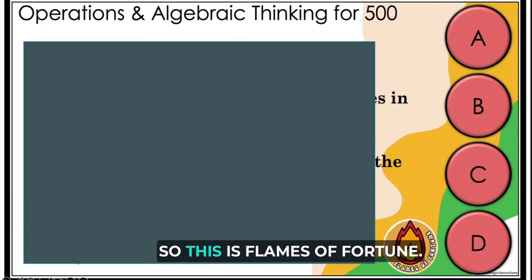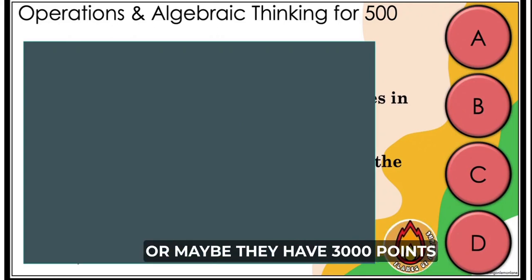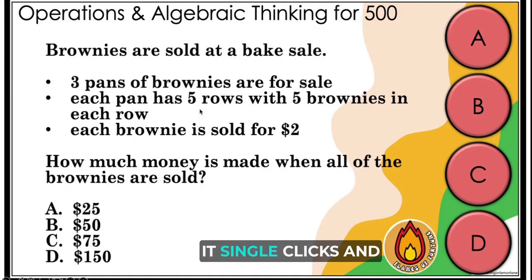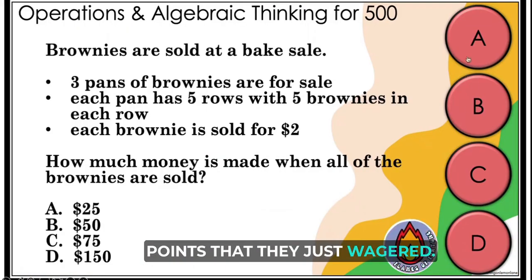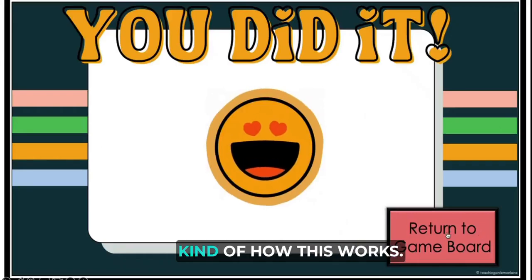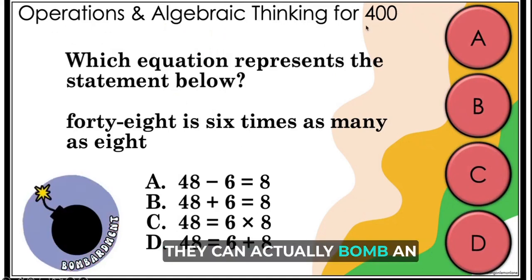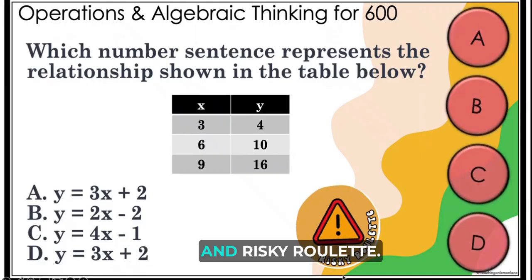Here's one of our disappearing squares — this is Flames of Fortune. The teams wager, say 500 points, or maybe they have 3,000 points and want to wager all of them. They wager, we click on the disappearing box, it single-clicks and disappears, and then students have the chance to answer and lock in their answer. If it wasn't quite right, they would lose all the points they just wagered. Bombardment is a fun one — if they get it correctly, they can bomb an opposing team and take that point value away.